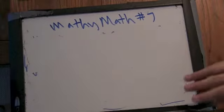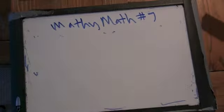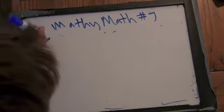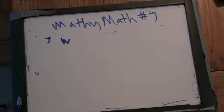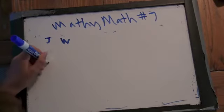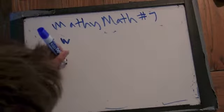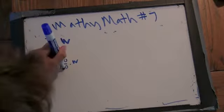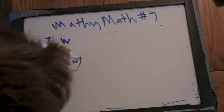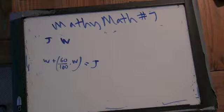Alright, so the jogging speed is J and the walking speed is W. So W plus 60% of W is the jogging speed. And how do we write the second part in an equation?